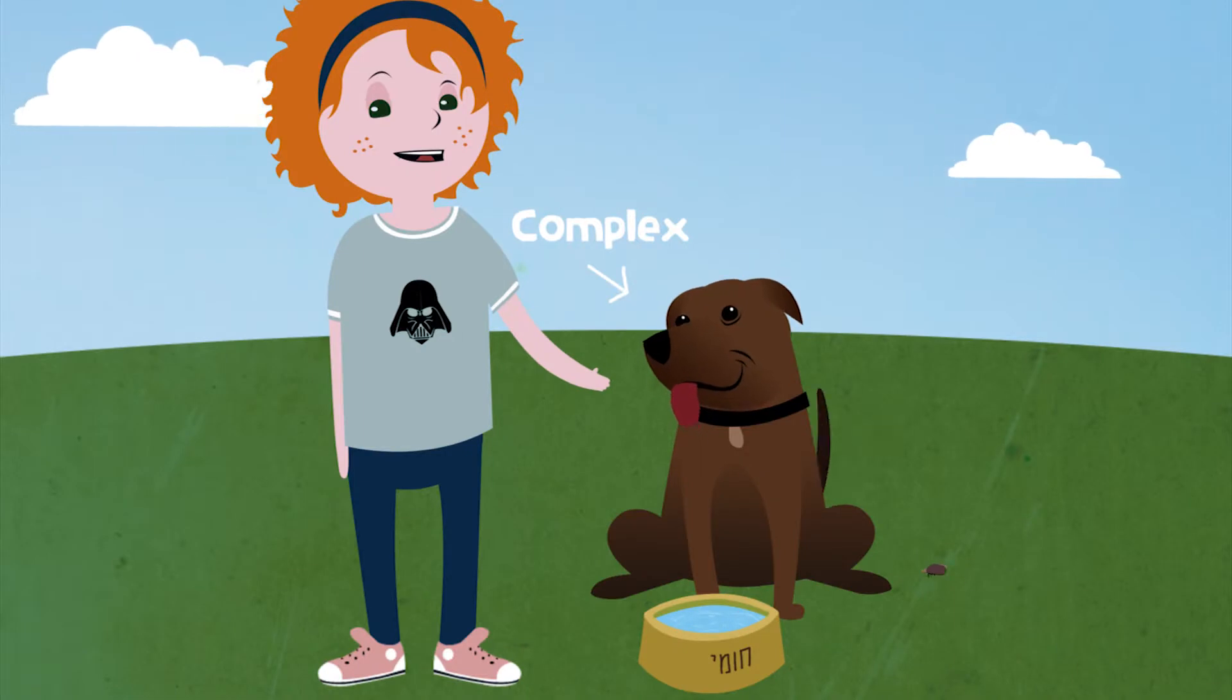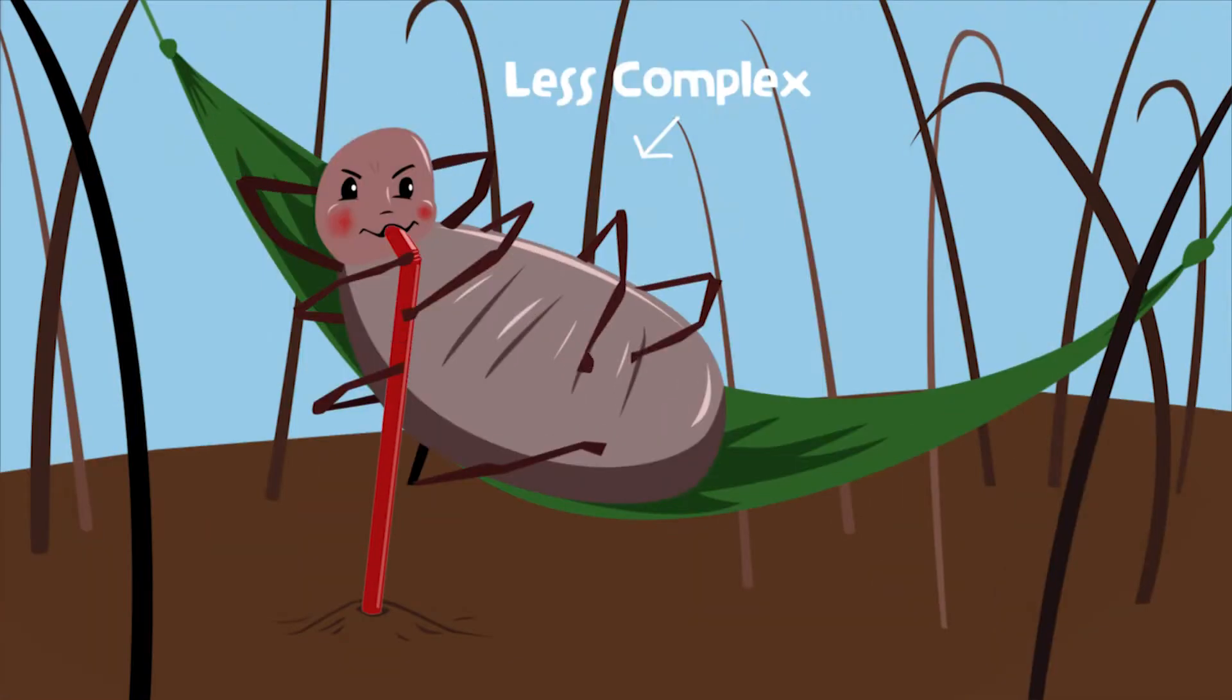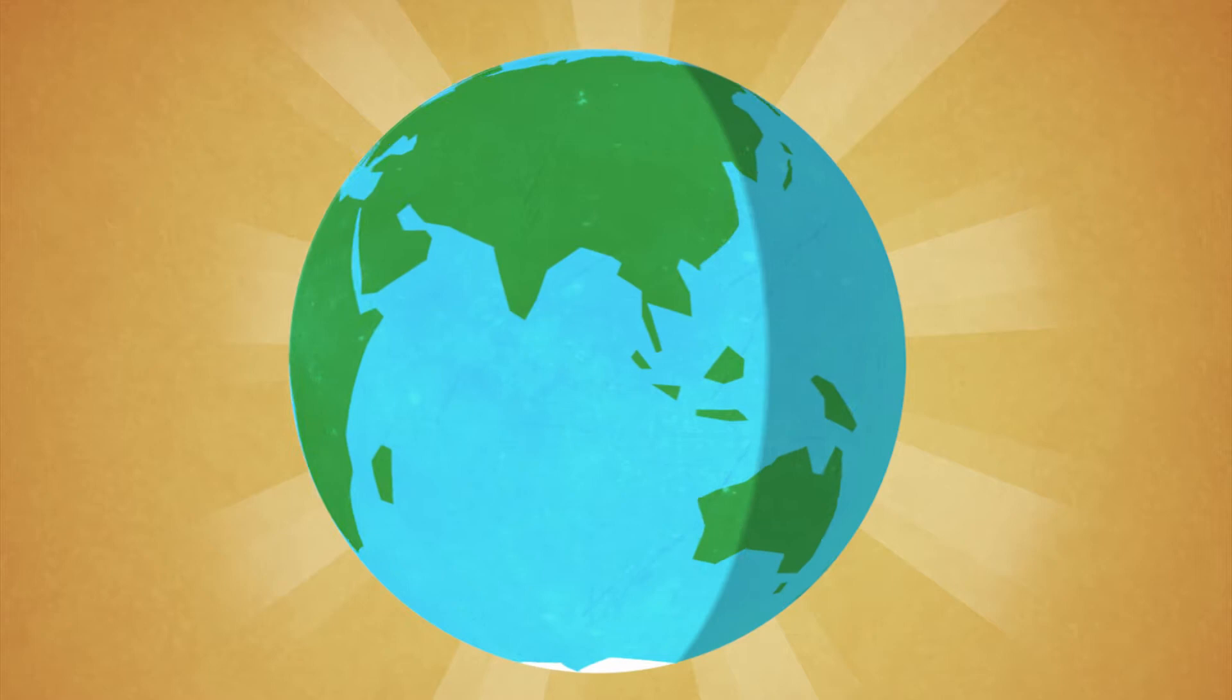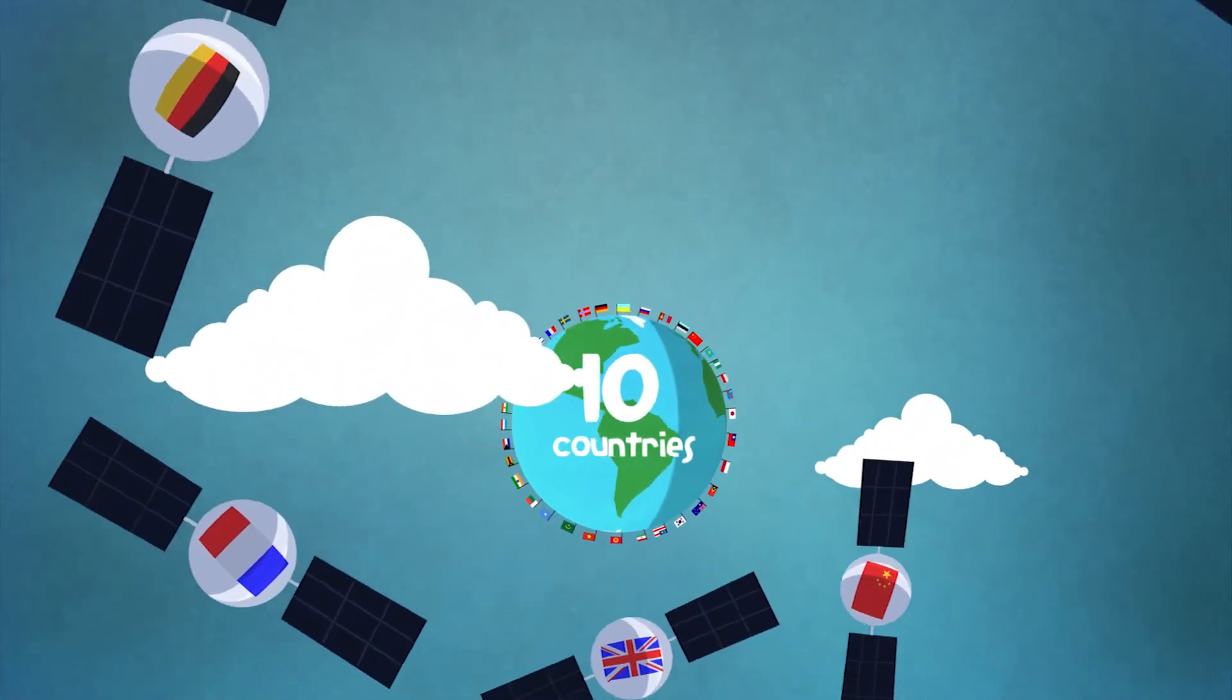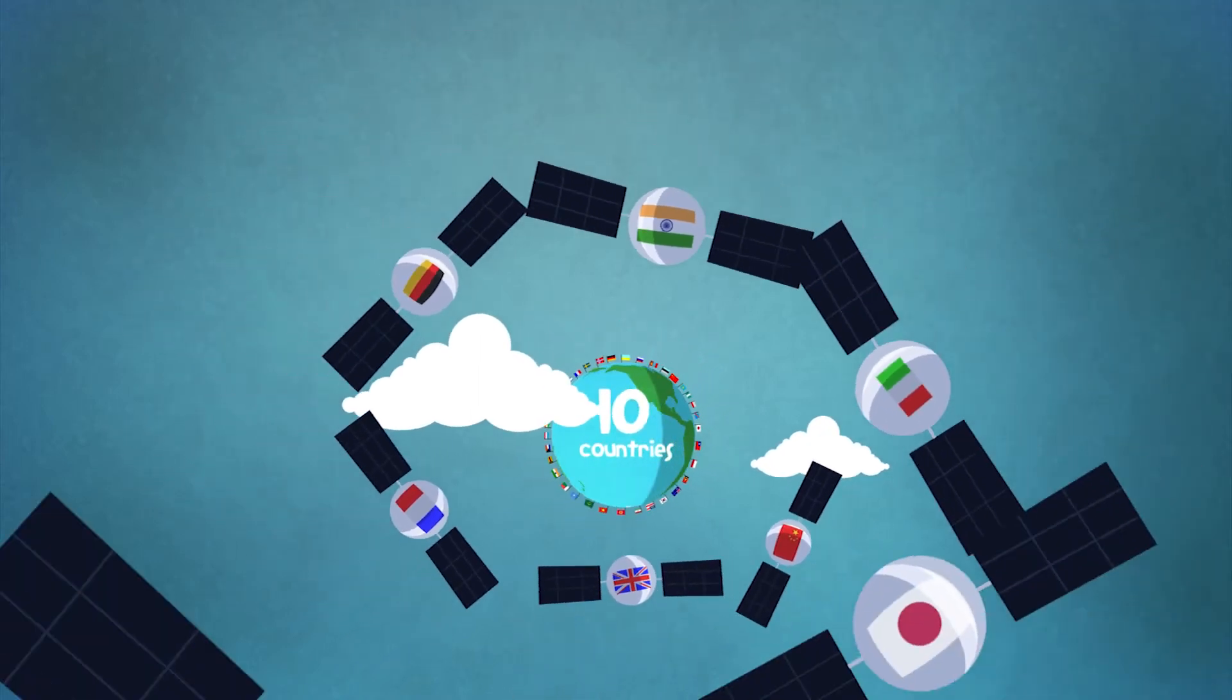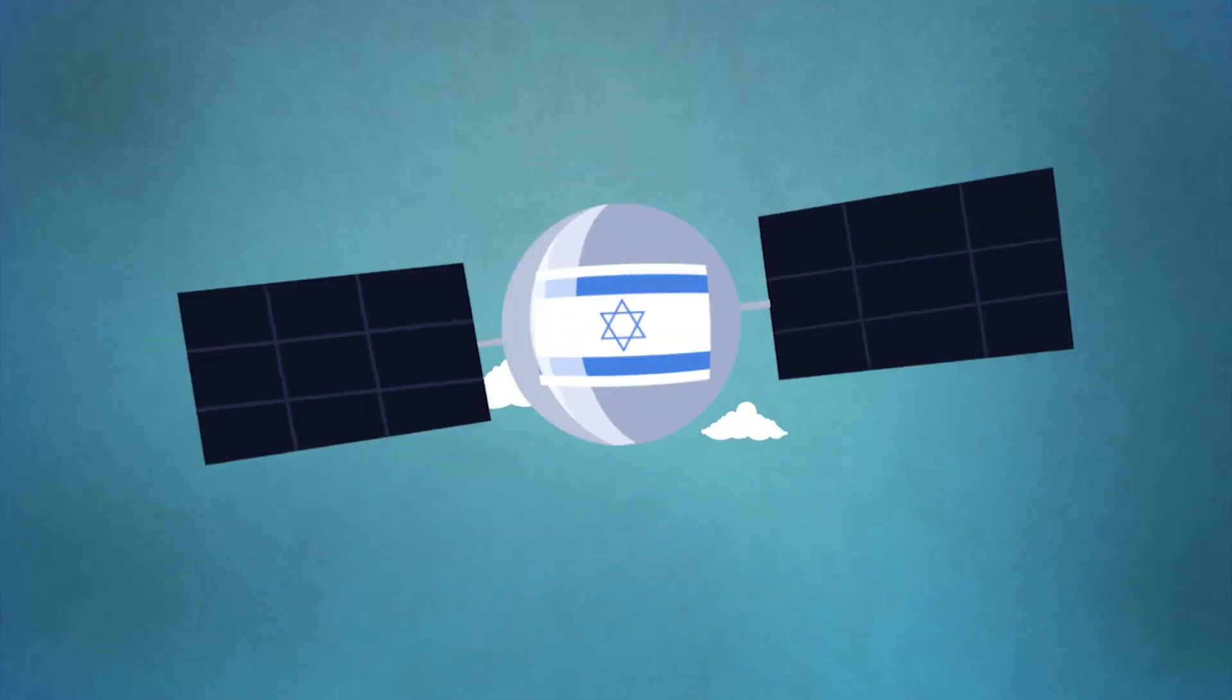More complex, or less. There are 195 countries on Earth. Ten of them have the ability to launch rockets into space, and to operate satellites and spaceships. Israel is one of them.